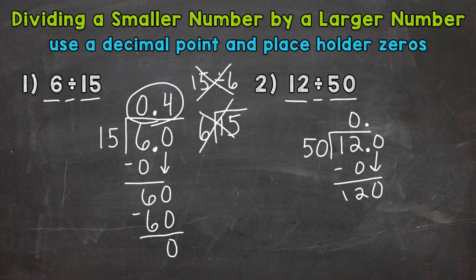So how many whole groups of 50 out of 120? Well, two, that gets us to 100. And that's as close as we can get to 120. So two, let me extend this division bar there. Two times 50 is 100. Subtract. And we get 20.